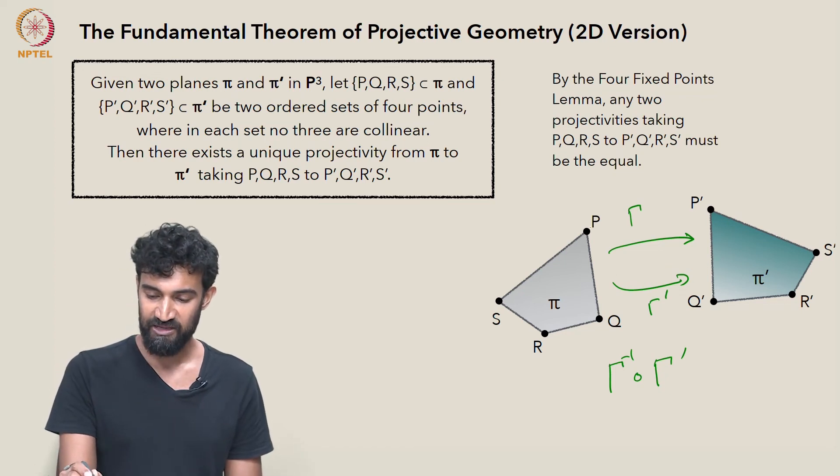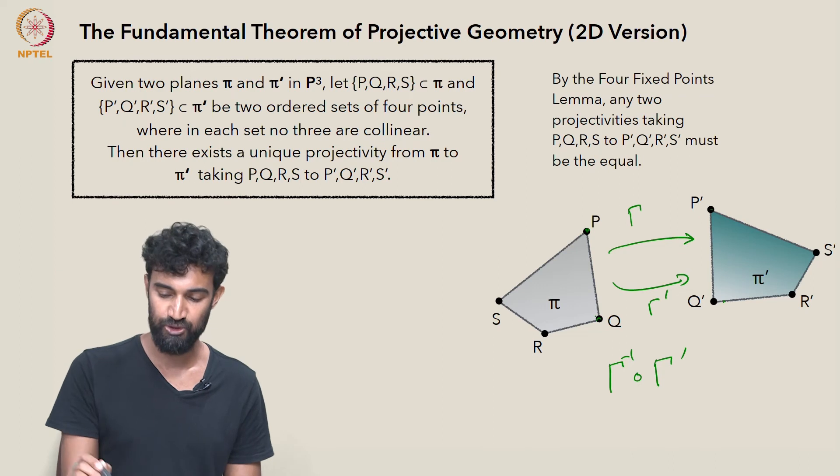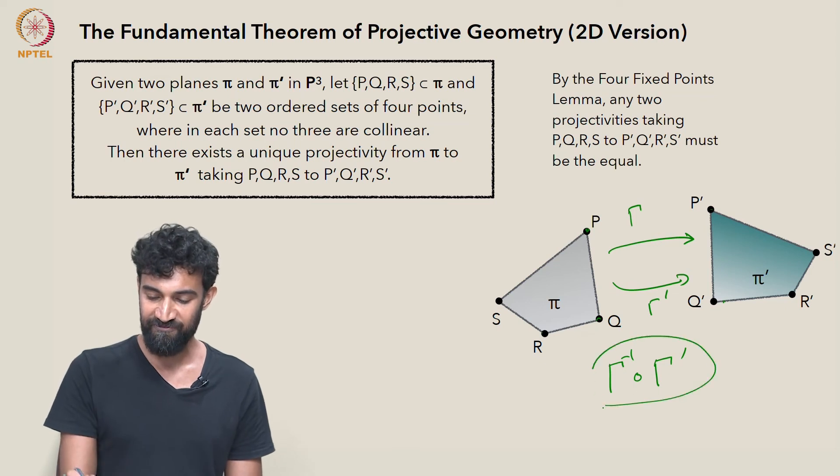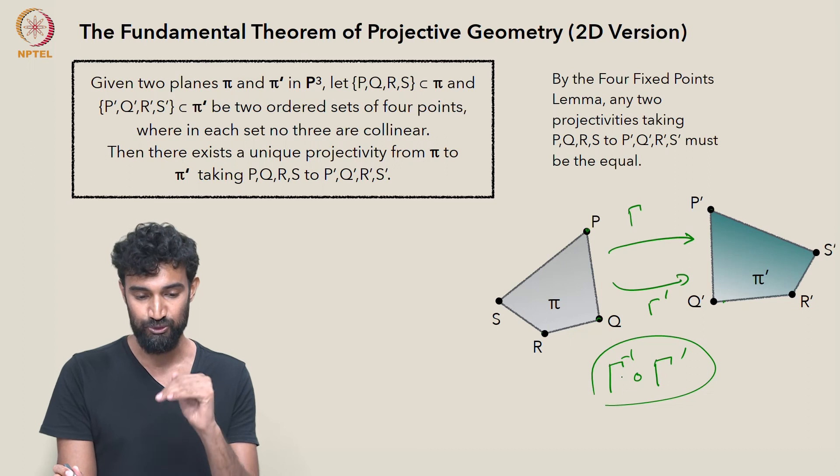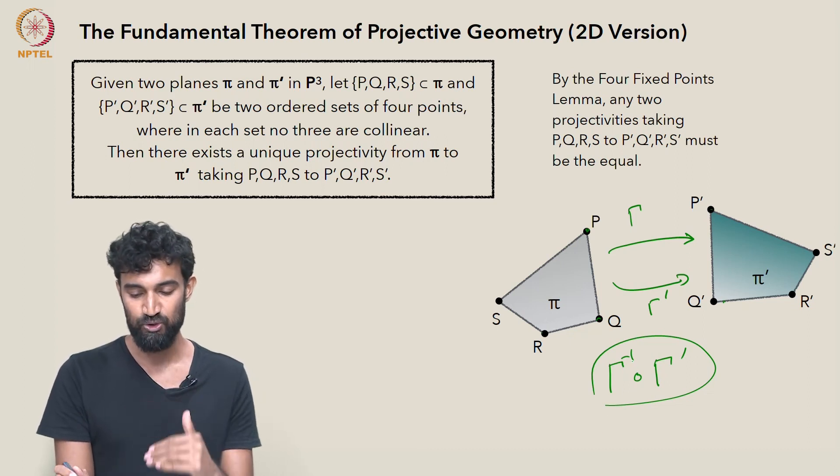That's going to take P to P′, then back to P. It's going to take Q to Q′, then back to Q. R to R′, back to R, S to S′, back to S. So this is going to fix P, Q, R, and S. It's a map from π to π which fixes P, Q, R, and S.